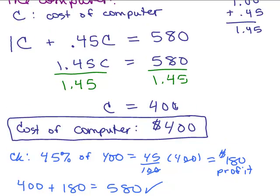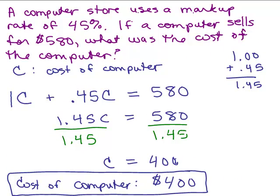So this is a little bit tricky, this one, because the markup, remember, is based on the cost of the computer, not what it sells for. So you have to reason this out. So here we've got, that's the cost of the computer, right? That's the profit right here. The profit or the markup mean the same thing. And this over here refers to the selling price.